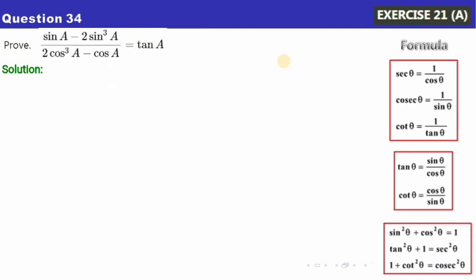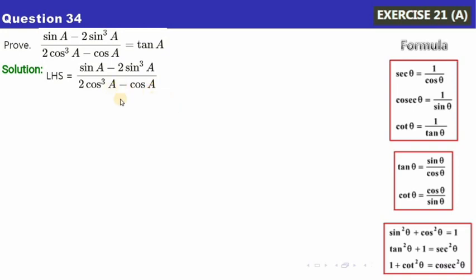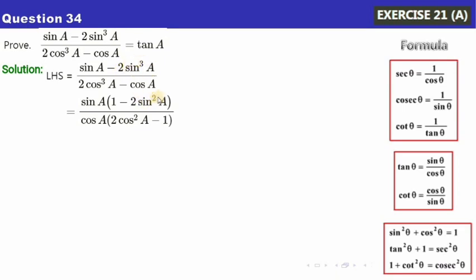Now let's look at Question 34 — we need to prove this identity. Starting with the left-hand side: in the numerator, sin³A and sinA share sinA as a common factor; in the denominator, cos³A and cosA share cosA as a common factor. Taking sinA out from the numerator gives 1 minus 2sin²A.